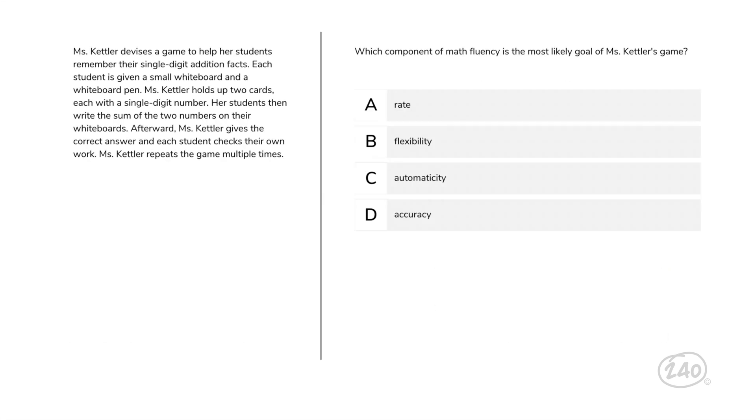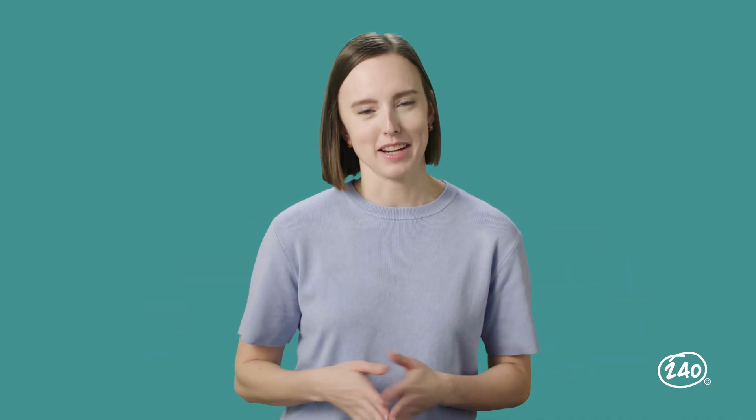Miss Kettler devises a game to help her students remember their single digit addition facts. Take a look at the description of this activity. Which component of math fluency is the most likely goal of Miss Kettler's game? This question gets into the definitions of rate, flexibility, automaticity, and accuracy. And the answer is C. Automaticity is the ability to give a correct answer without having to think about it. Repetition will help students with this. And that's the end of our practice questions.